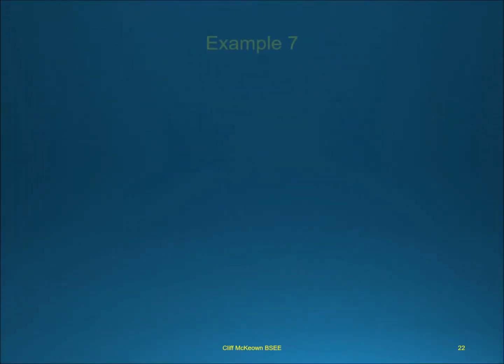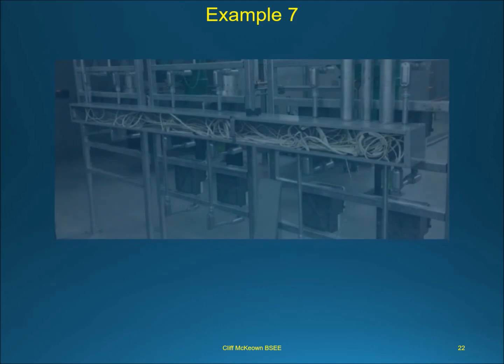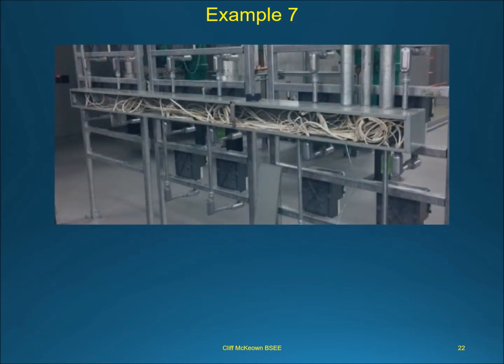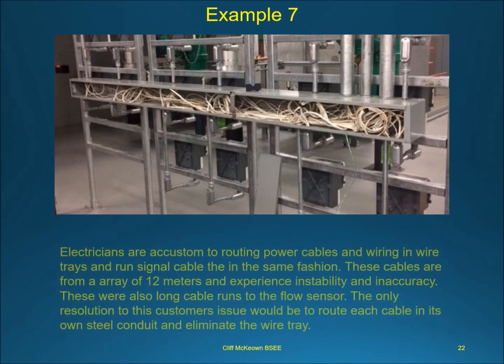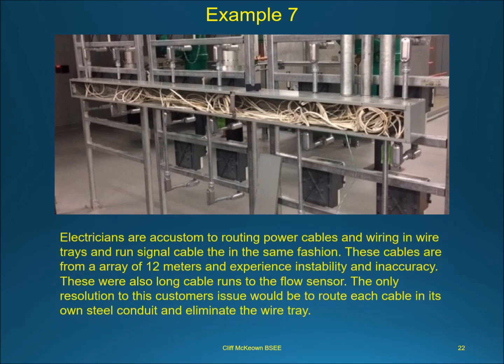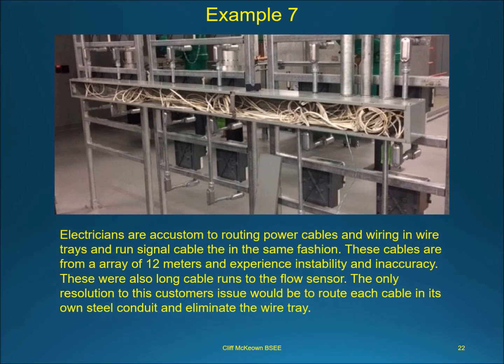Electricians are accustomed to routing power cables and wiring in wire trays, and ran signal cable in the same fashion. These cables were from an array of 12 meters and experienced instability and inaccuracy, with long cable runs to the flow sensors. The only resolution to this customer's issue would be to route each cable in its own steel conduit and eliminate the wire tray.